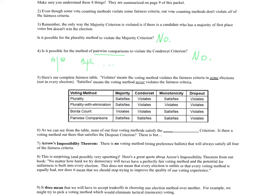As you can see from the table, none of the four methods satisfy the dropout criterion — it says 'violates' for all of them. Is there a voting method we could devise that satisfies the dropout criterion? We could devise one, but Arrow's Impossibility Theorem says there is no voting method using preference ballots that will always satisfy all four fairness criteria. So if we devised a method that could satisfy the dropout criterion, it would have to violate one of the other three.